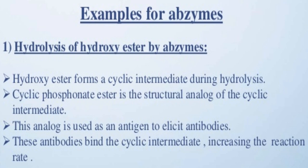Examples of abzymes — hydrolysis of hydroxy ester by abzymes: hydroxy esters form a cyclic intermediate during hydrolysis. Cyclic phosphonate ester is the structural analog of the cyclic intermediate. This analog is used as an antigen to elicit antibodies. These antibodies bind the cyclic intermediate, increasing the reaction rate.